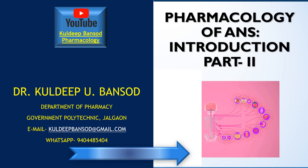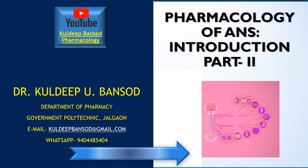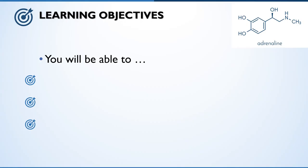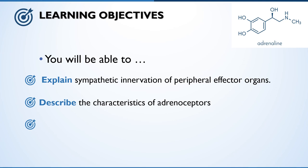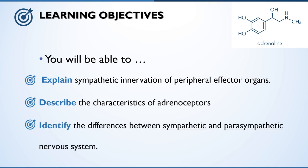Hello, I am Dr. Kuldeep and I welcome you all in a Learning Dialogue on Pharmacology of Autonomic Nervous System and Introduction, Part 2. In the previous part, we emphasized on parasympathetic innervations, some facts about parasympathetic neurotransmitters and many more. In this part, we emphasize on the sympathetic nervous system. After going through this learning dialogue, learners will be able to explain sympathetic innervation of peripheral effector organs.